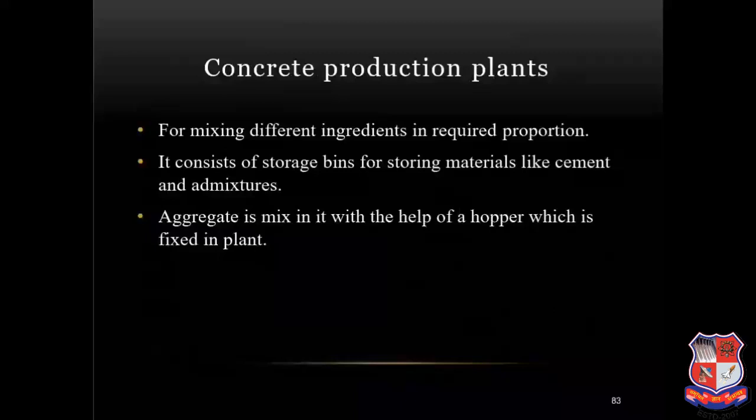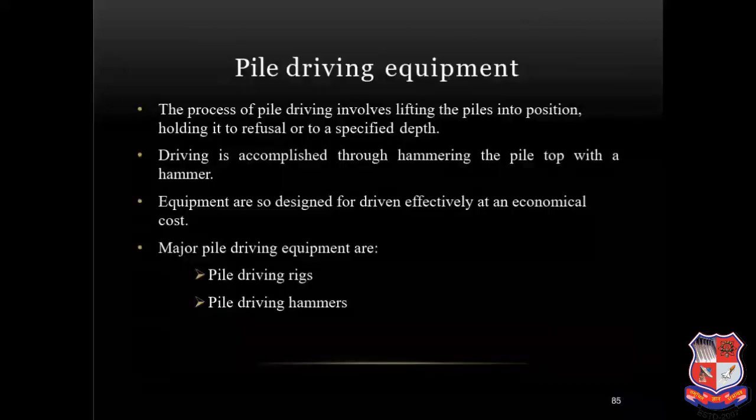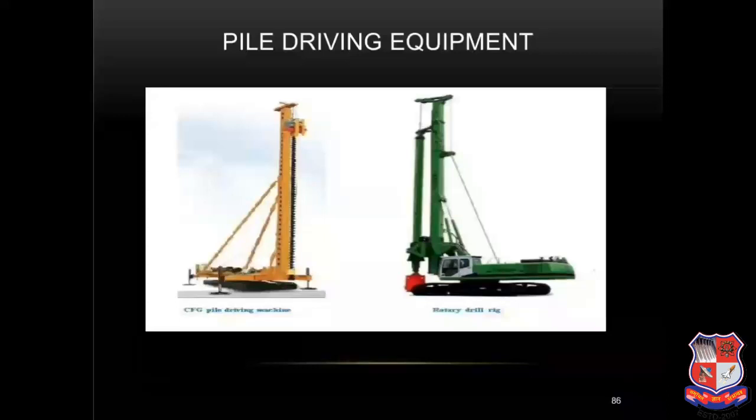Concrete production plant: for mixing different ingredients in the required proportion, it consists of storage bins for storing materials like cement and admixture. Aggregate is mixed with the help of a hopper which is fixed in the plant. Pile driving equipment: the process of pile driving involves lifting the piles into position and driving them to refusal or to a specified depth through hammering. Major pile driving equipment are pile driving rigs and pile driving hammers.